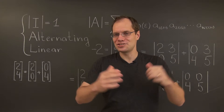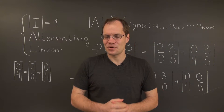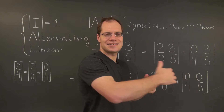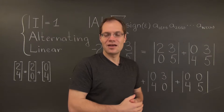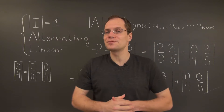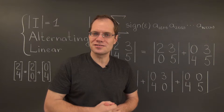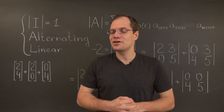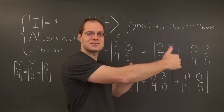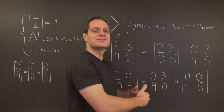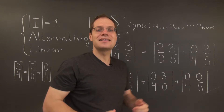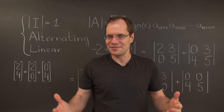What about the n×n determinant? For n×n determinants, this process repeats for n steps. On the second step, it is the second column that will be represented as a sum of n vectors, each with a single non-zero entry. Then each one of the n determinants after the first step will split into n other determinants, giving us a total of n squared.